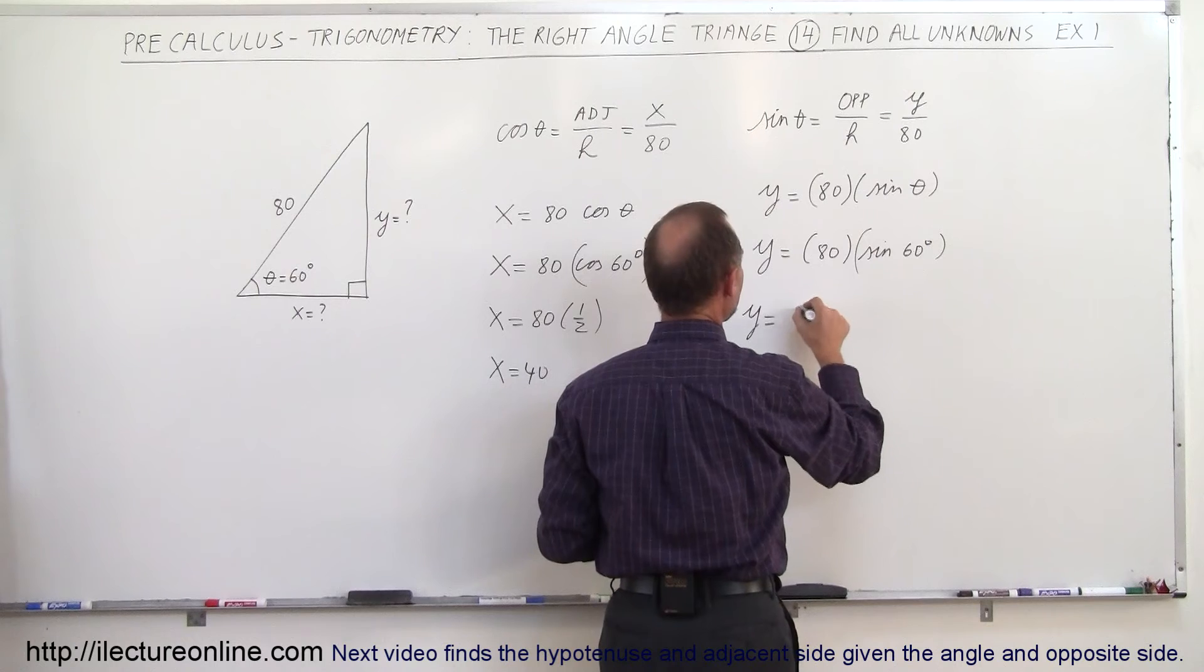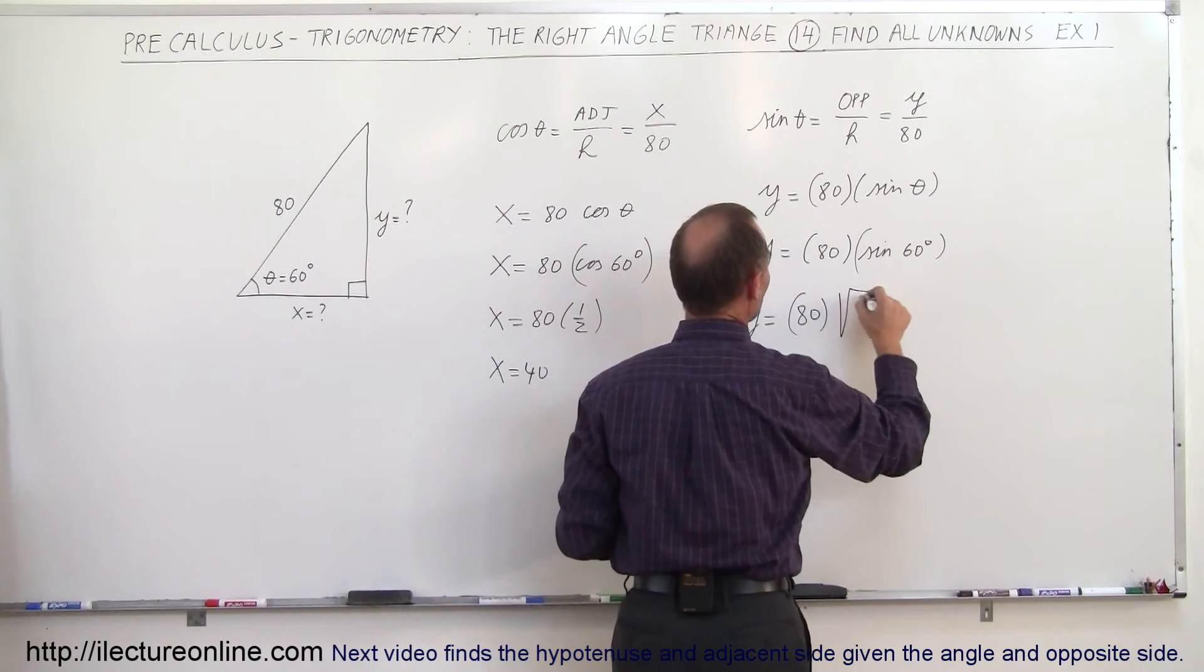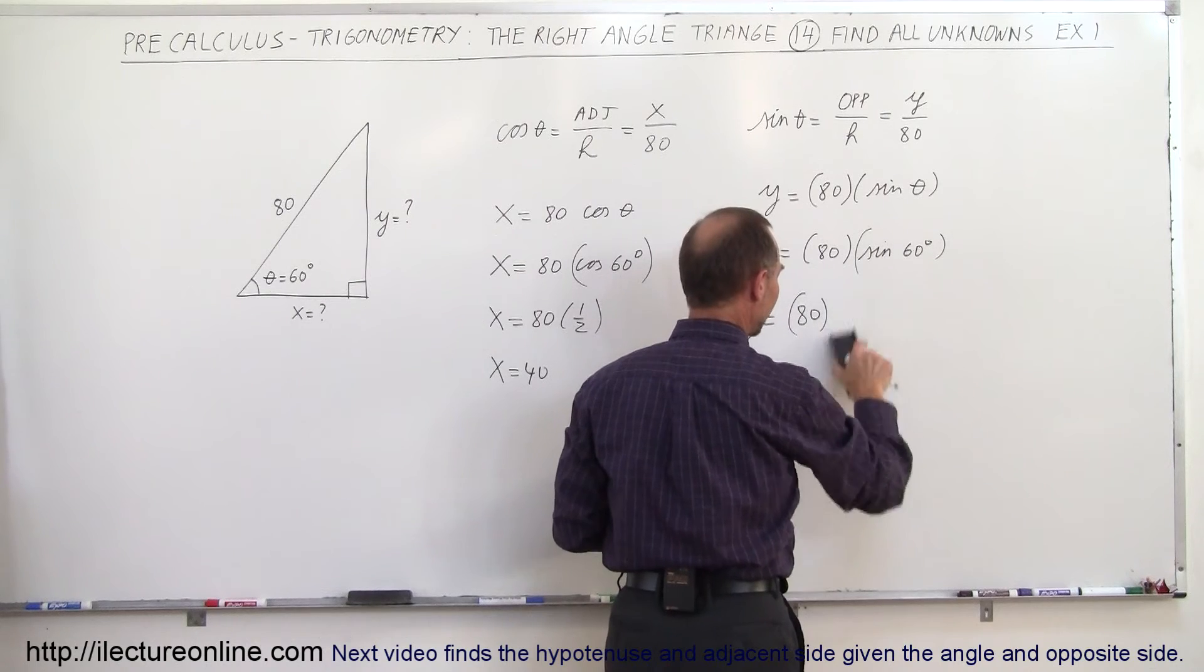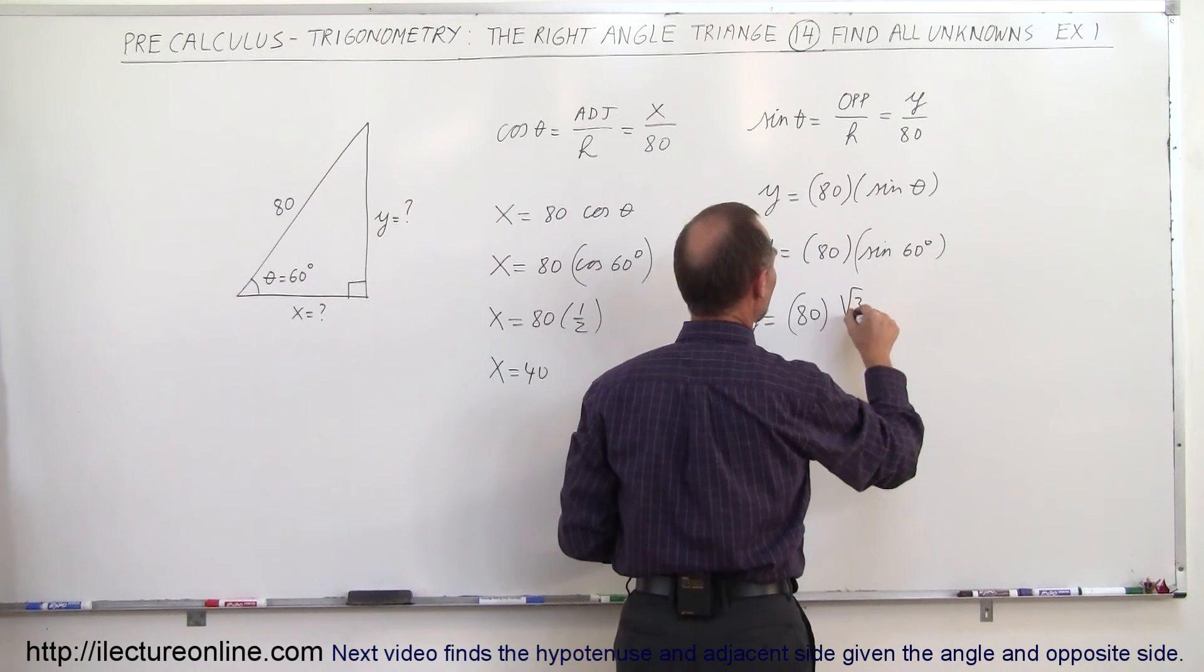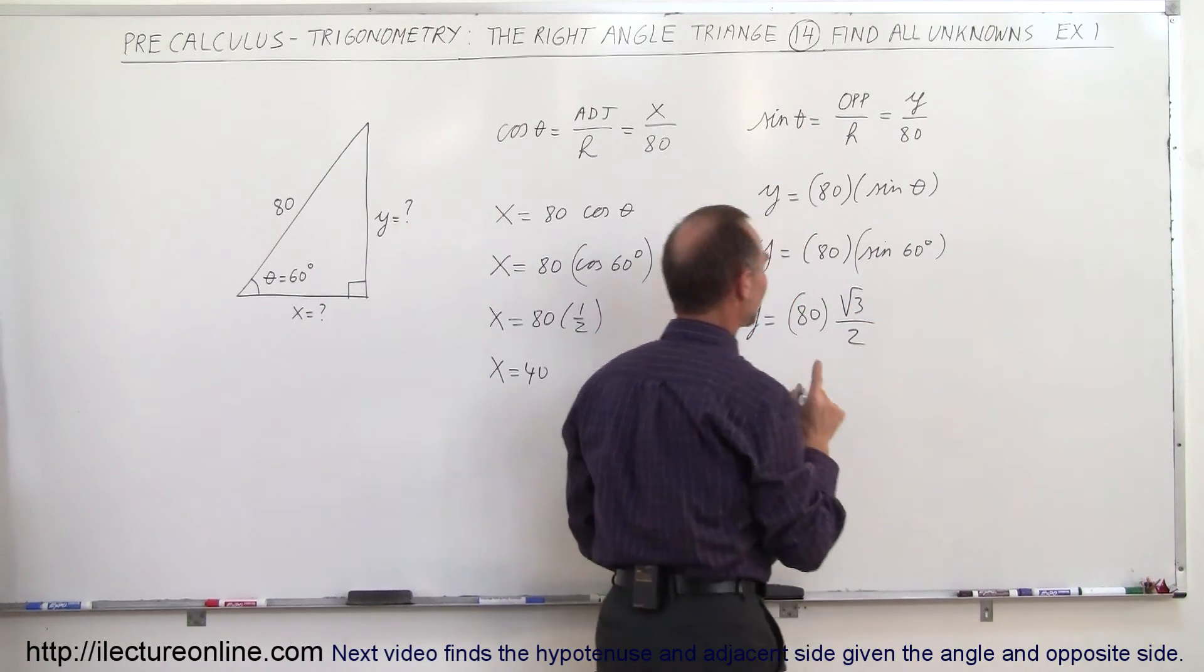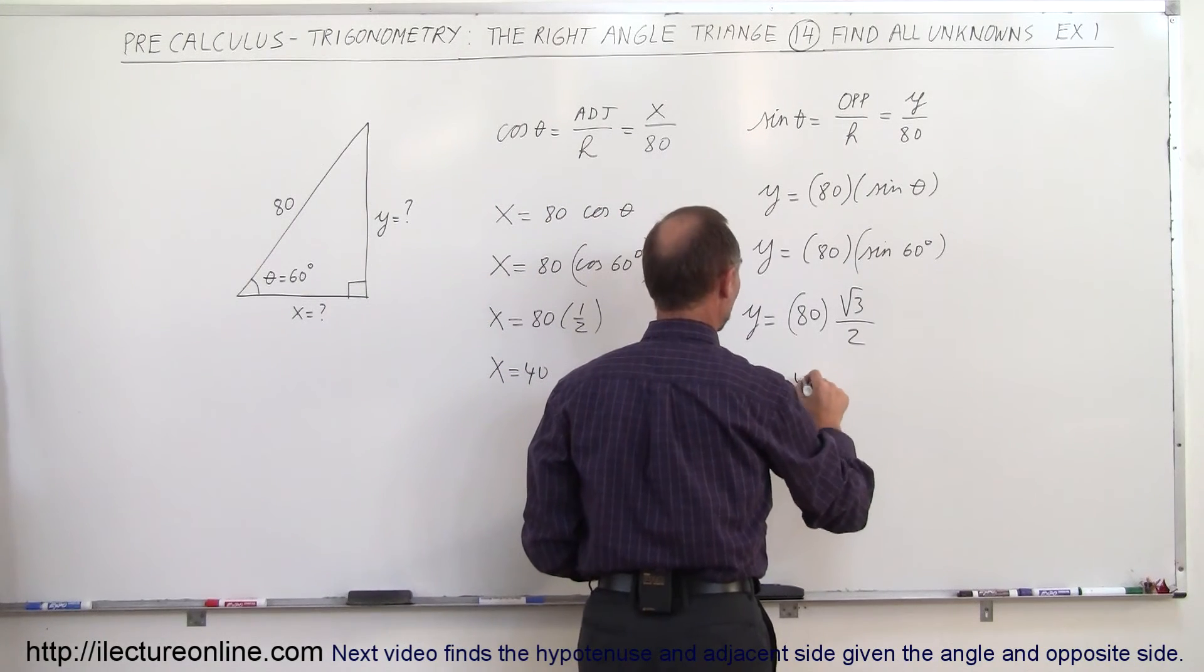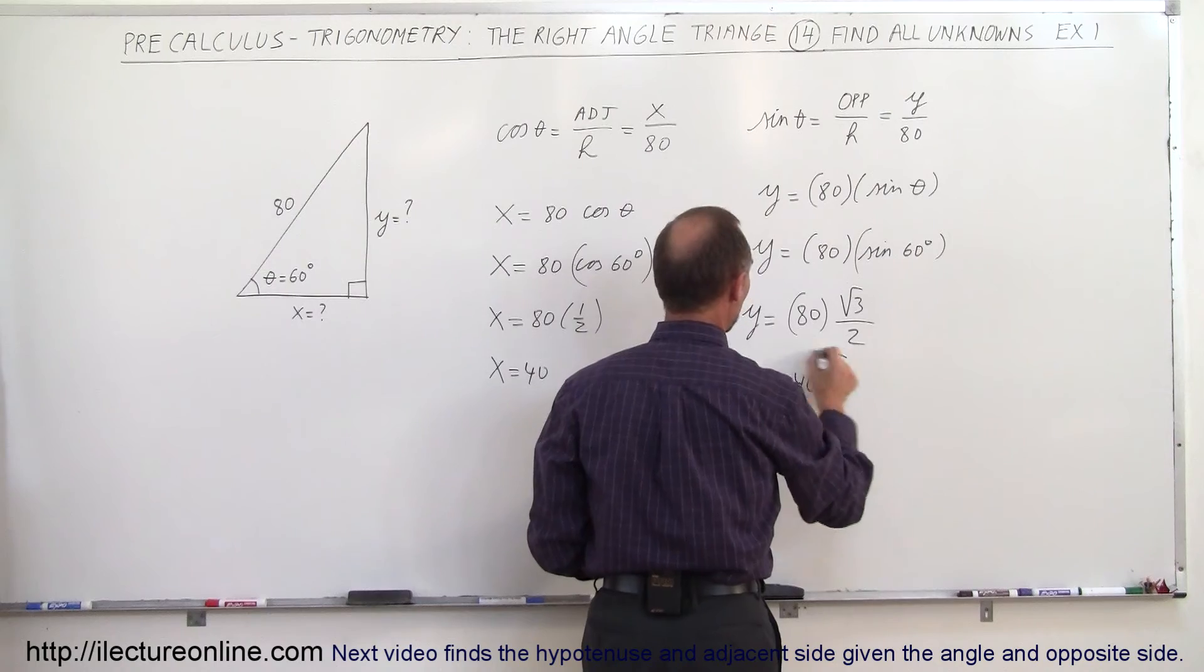So y is equal to 80 times the square root of 3 over 2. Whoa, not quite like that. It's equal to the square root of 3 divided by 2 like that. And so 2 goes into 80 forty times, so therefore we can say that y is equal to 40 times the square root of 3.